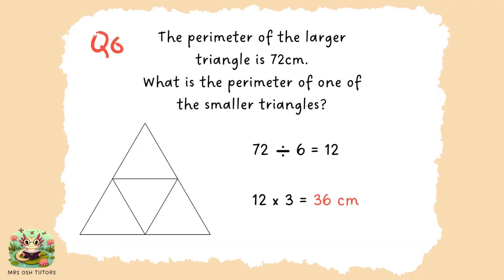Question six. A triangle has three sides, so our first step was to take the perimeter of the larger triangle — the distance all the way around — and divide it by six. That tells us how long one side of the smaller triangles is: 12 centimetres. We can see that on each side of the large triangle there are two sides of a small triangle. Once we know one side of a smaller triangle is 12 centimetres, we multiply by three, giving a perimeter of 36 centimetres.